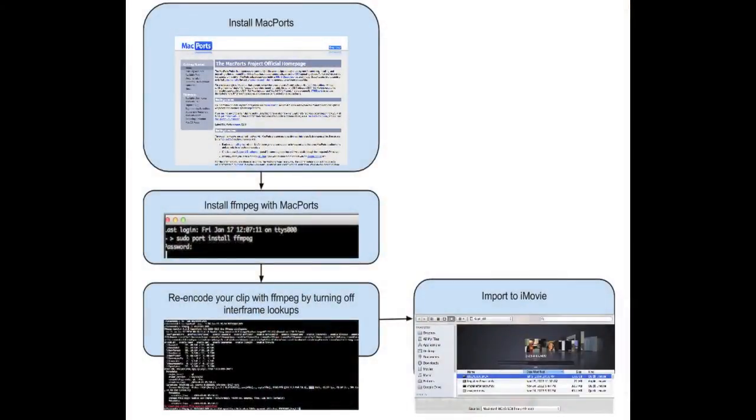There's a solution to this. There's a command line tool called ffmpeg, which you can use to re-encode your movie by turning off the interframe lookup. Then the importing will be very straightforward and quick. Our plan is to install MacPorts, then install ffmpeg with MacPorts, and then re-encode your clip with ffmpeg by turning off the interframe lookups. If you already have MacPorts and ffmpeg, you can skip these steps.